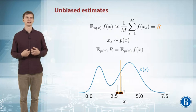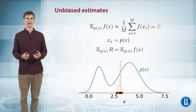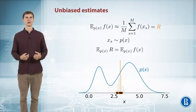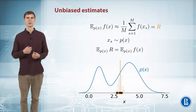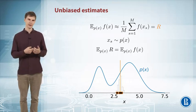And if you put it formally, this is the definition of an unbiased estimate. An estimate R is called unbiased if its expected value equals to the thing we want to approximate. So here it's true.